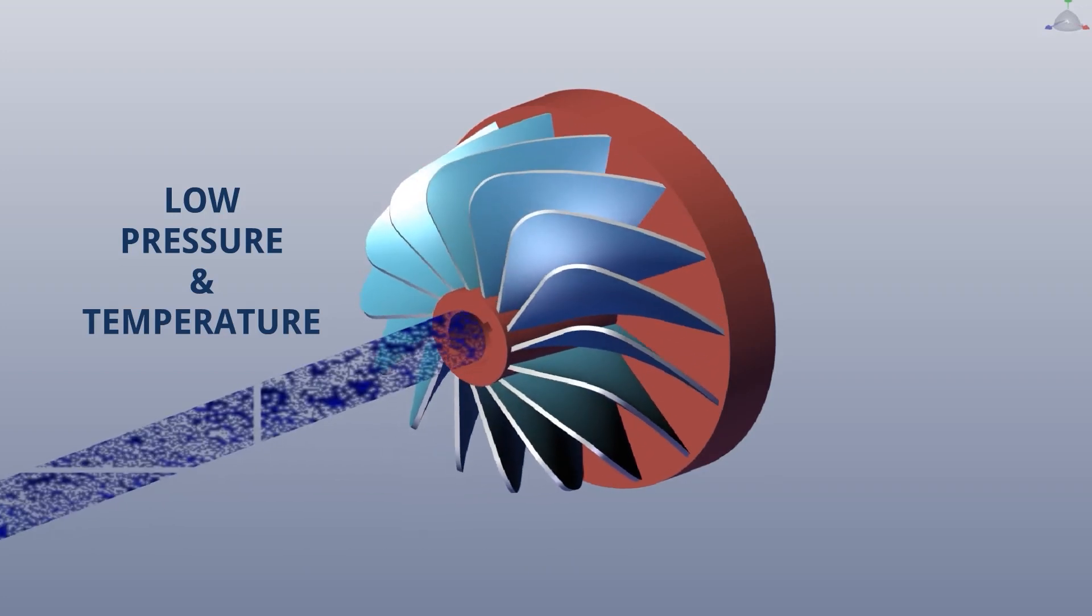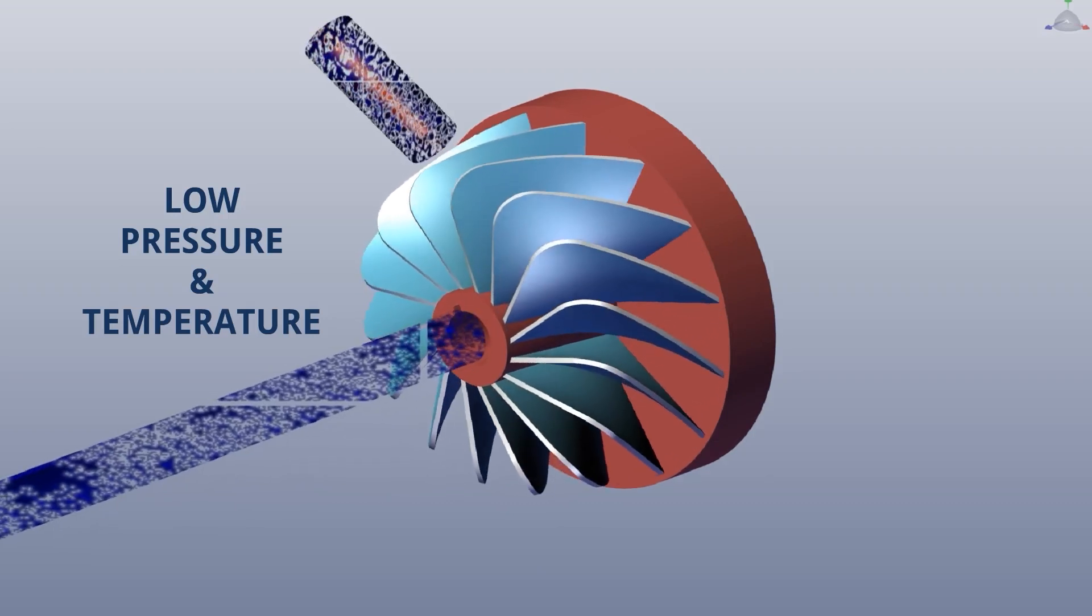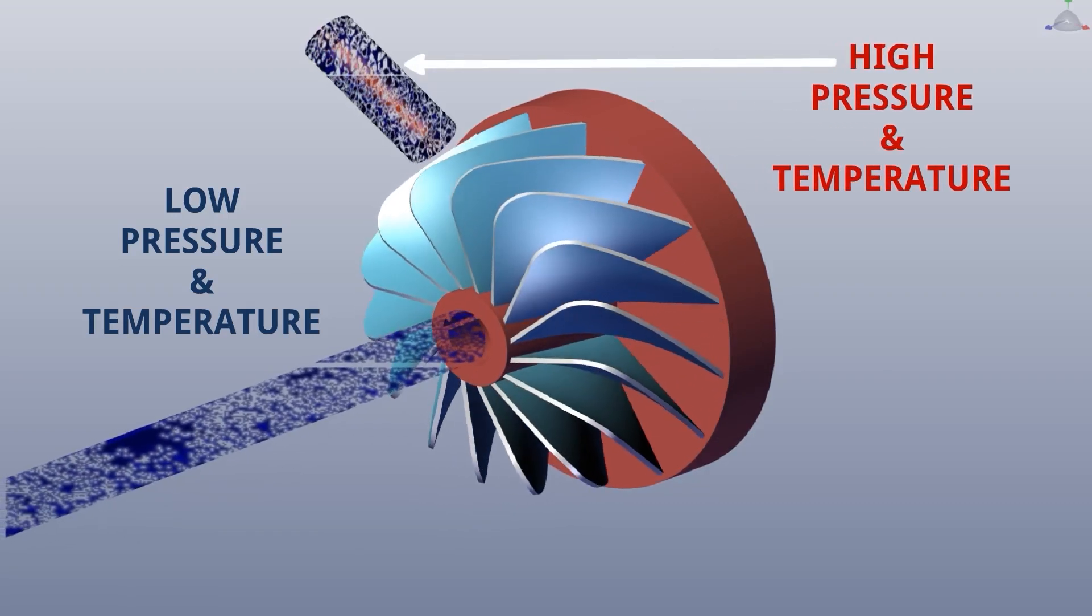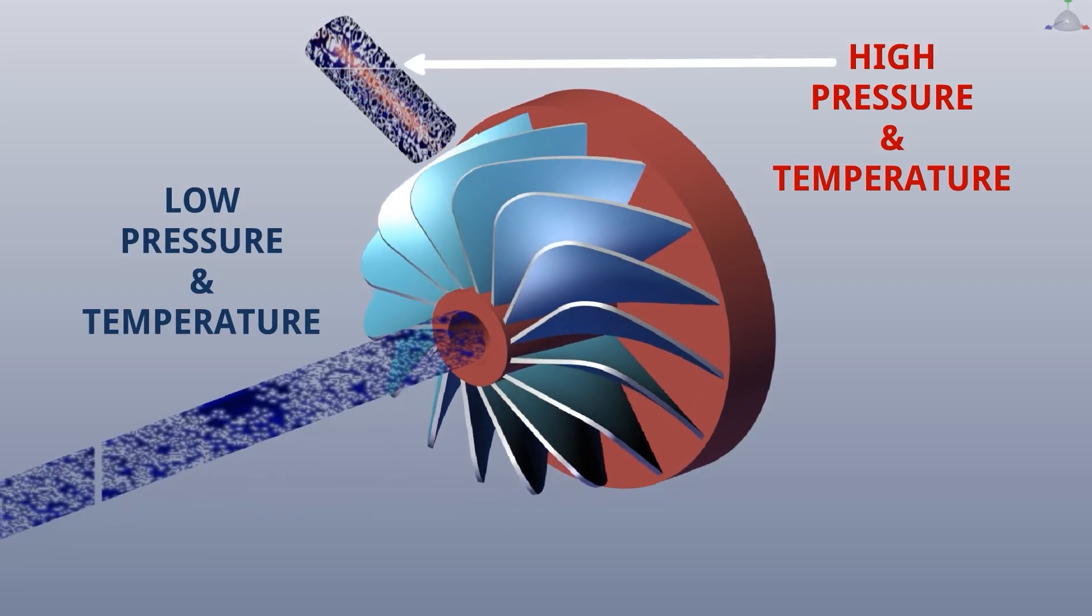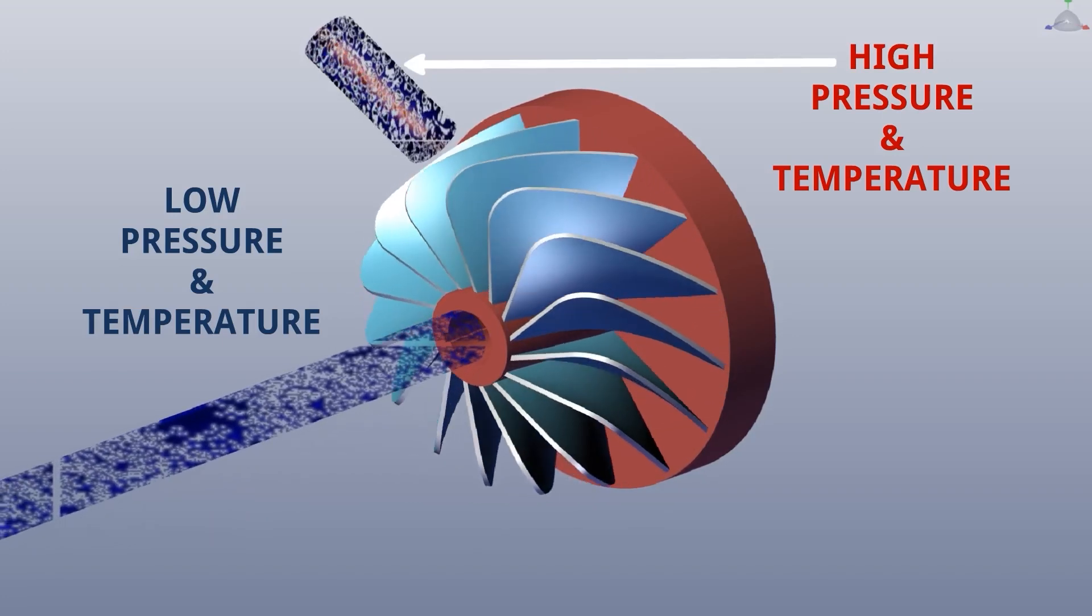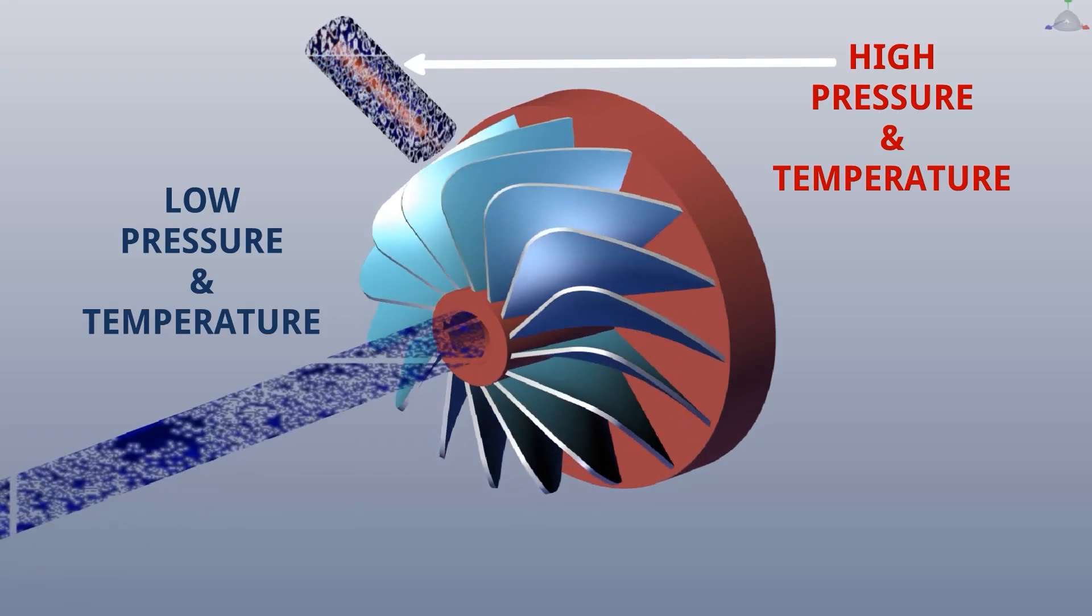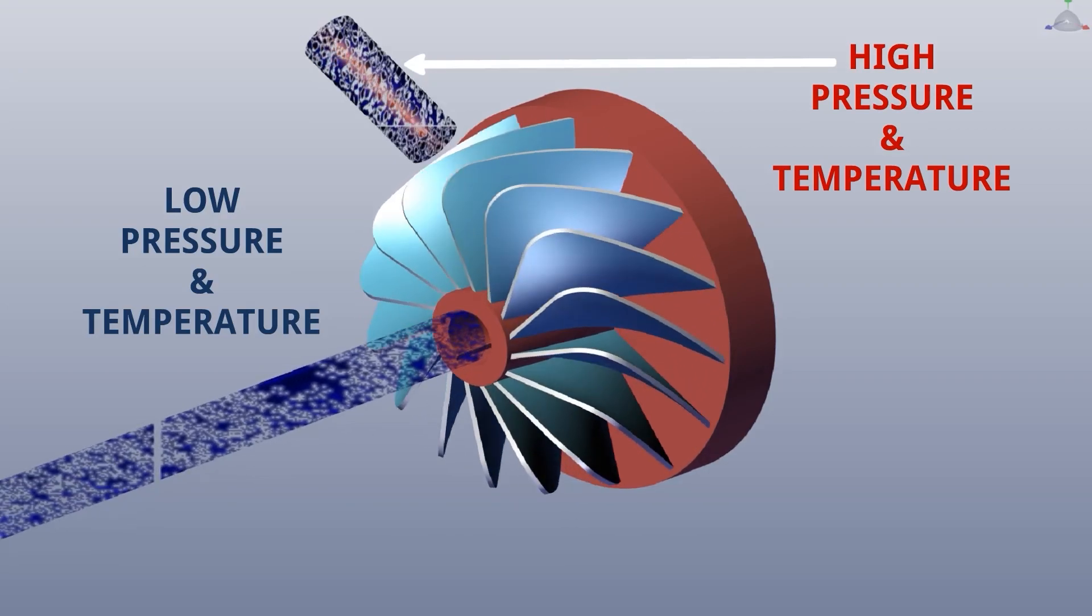After compression, refrigerant vapor changes into high pressure and high temperature. Basically it creates a pressure differential: at inlet low pressure and outlet high pressure. This pressure differential helps to flow the refrigerant inside the refrigerant cycle.